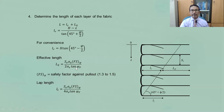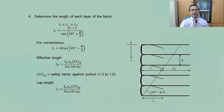Lastly, the lap length L sub L, measured from the facing to the end of the geosynthetic material, is given as S sub V times sigma sub A times FS sub V, divided by (4 times sigma sub V times tangent phi sub F). Comparing L sub L and L sub E, we can see that L sub E is two times longer than L sub L. Those are the steps to follow in order to design a retaining structure involving geosynthetic material.